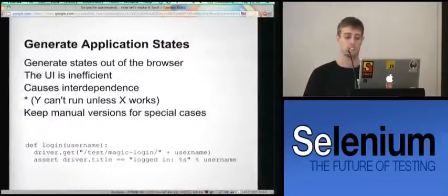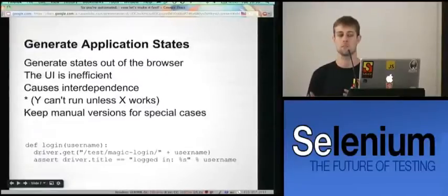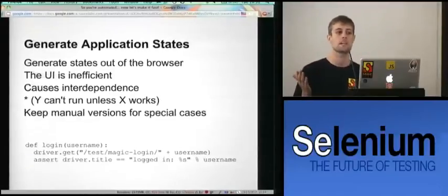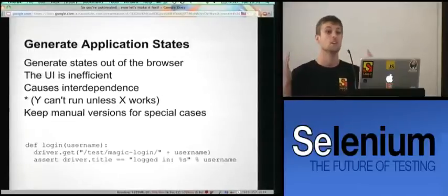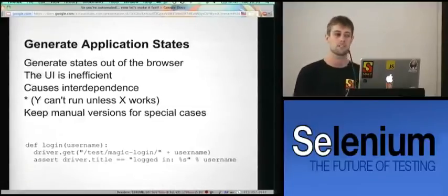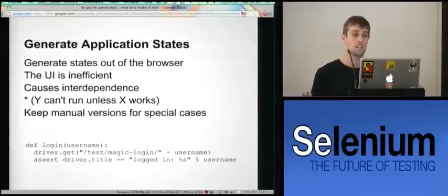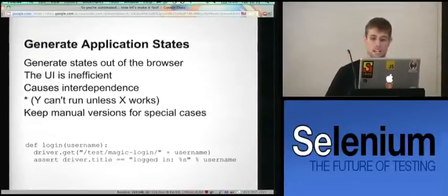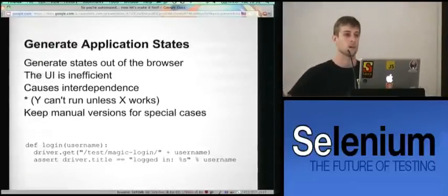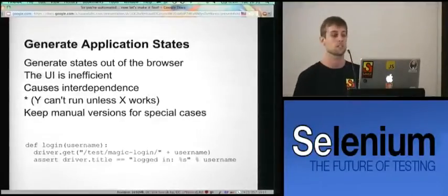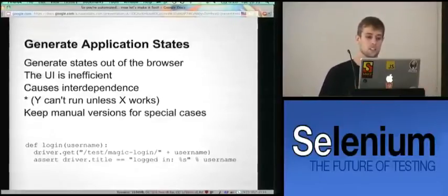Generating application state is not only going to make your suite faster, but it'll make your reports more detailed and better reflect reality. If your login breaks, you don't want to find out in your checkout test — you want your checkout test to tell you whether checkout functionality works or not. The best way is generally generating application state without going through the UI, though this requires server-side development. Keep manual versions of your page object models so that when you actually need to test the login functionality, you can do it.